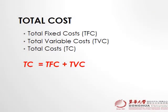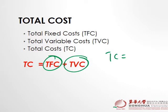Total cost is the sum of total fixed cost and total variable cost. So total cost equals fixed cost plus variable cost — it is implicit that there is the word 'total' behind that.